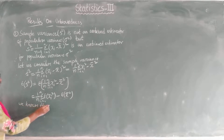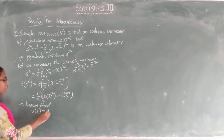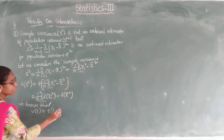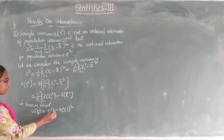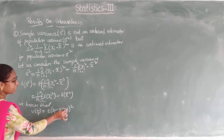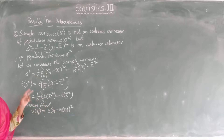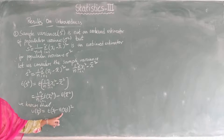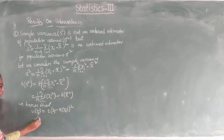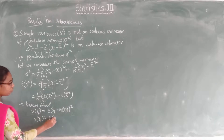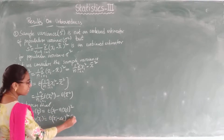We know that variance of x equals expectation of x² minus (expectation of x)². So for the term xᵢ: variance of xᵢ equals expectation of xᵢ² minus (expectation of xᵢ)². From the previous result, equation 2 gave us that expectation of xᵢ = mu. So variance of xᵢ equals expectation of xᵢ² minus mu².